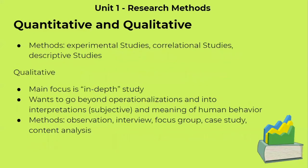The specific methods under quantitative research fall into three types: experimental studies, correlational studies, and descriptive studies. We will go further in depth on each of these in future videos.